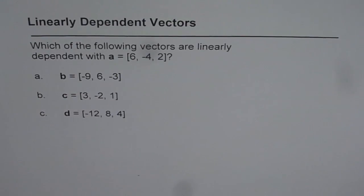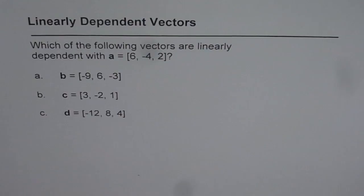Linearly dependent vectors. Which of the following vectors are linearly dependent with A equals 6, -4, 2? So we are given three different vectors: B, C, D. I will solve this question for one of them and then you can solve for the other two. That way you will learn while you watch my videos. So that is a good idea.